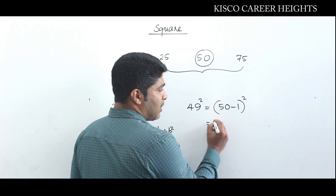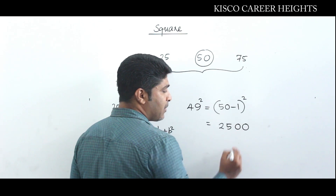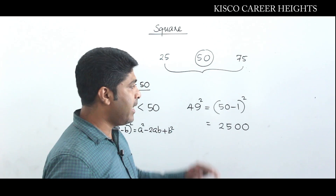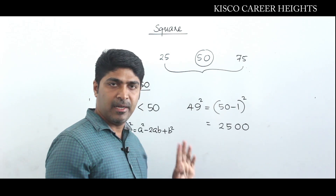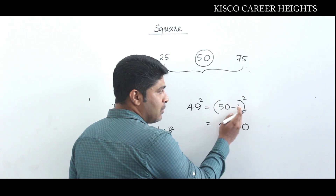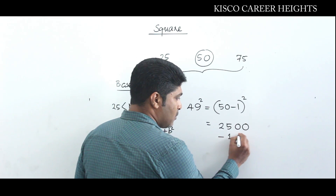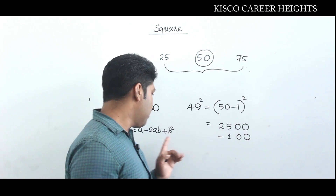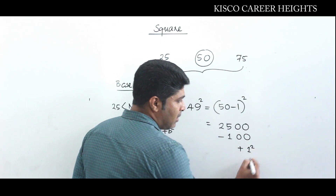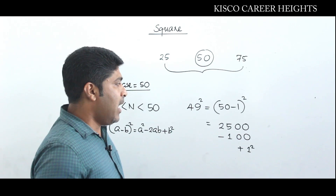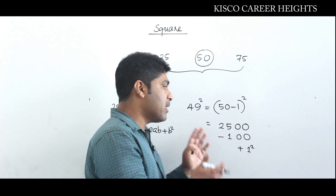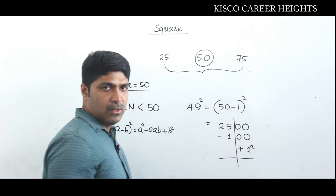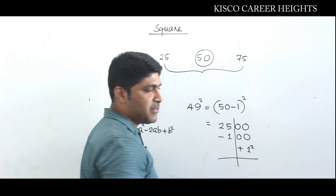Expanding (50 − 1)²: first, 50² = 2500. Then minus 2ab = minus 2 × 50 × 1 = minus 100. And the third term is plus b² = plus 1². We are not making a numerical conclusion of this all at once — instead, we split this operation into two parts: the right side of our answer and the left side of our answer.